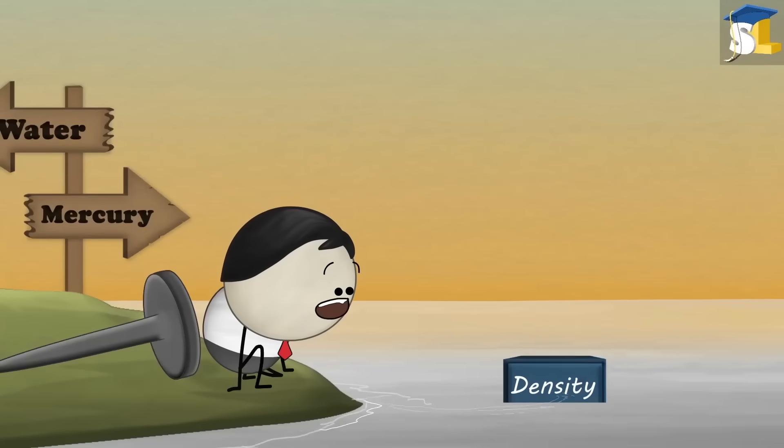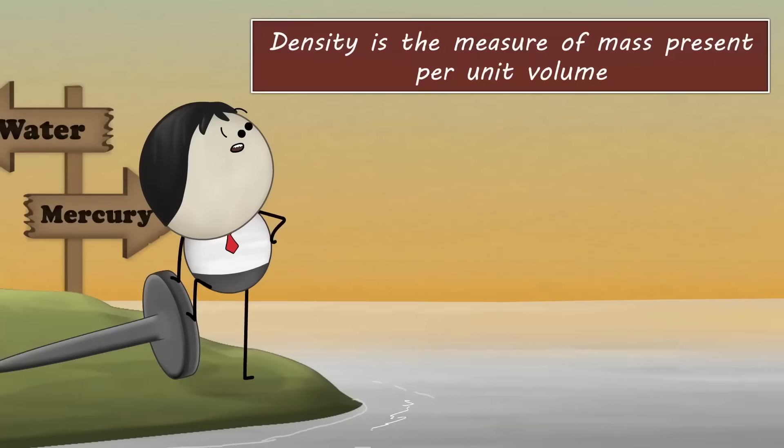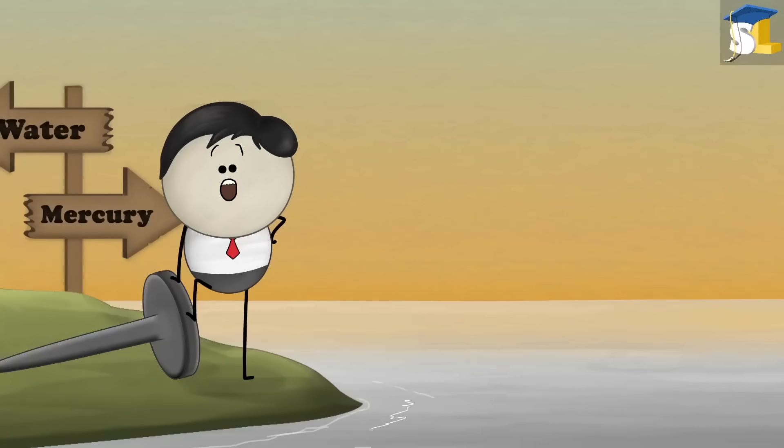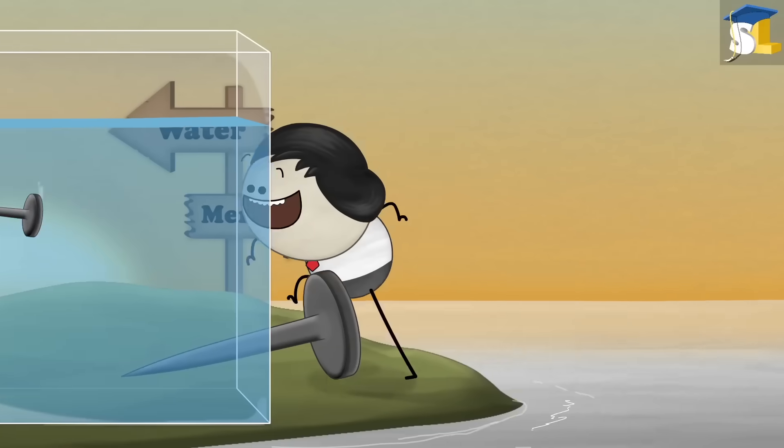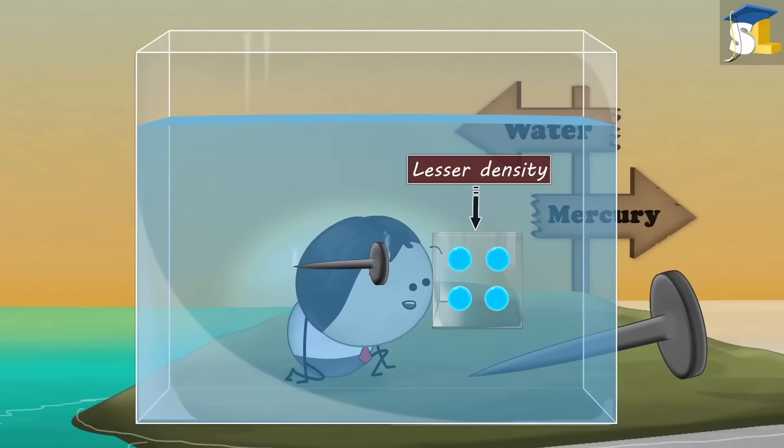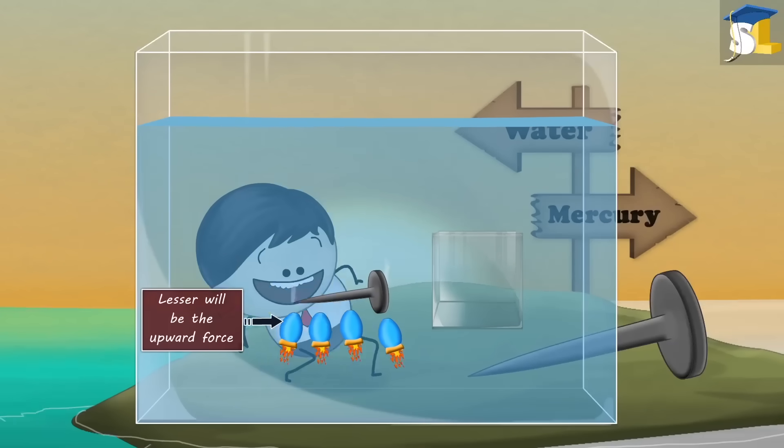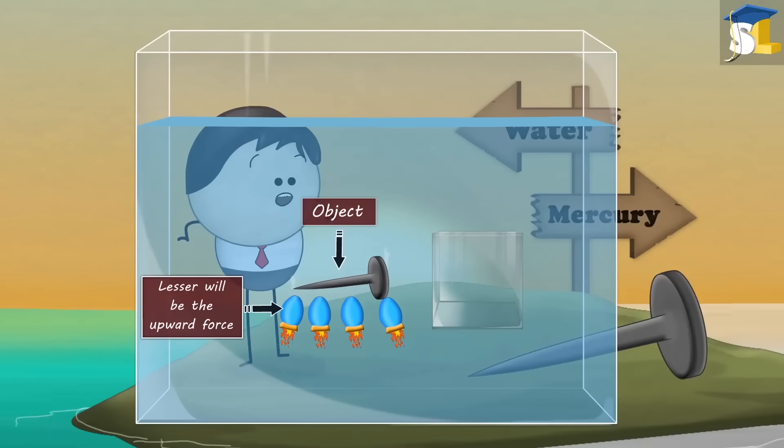Do you know why the iron nail sank in water and floated on mercury? It is because of density. Density is the measure of mass present per unit volume. Lesser the density of the fluid, lesser will be the upward force exerted by the fluid on the object placed in it.